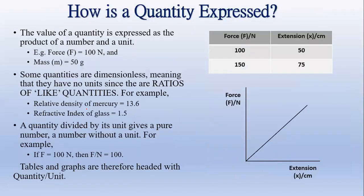How do we express quantities? The value of a quantity is expressed as the product of a number and a unit. For example, a force of 100 newtons: 100 is the number and newton is the unit. Newton is a unit for force, which we will cover under derived quantities. Another example: mass equals 50 grams — the number is 50 and the unit is grams.